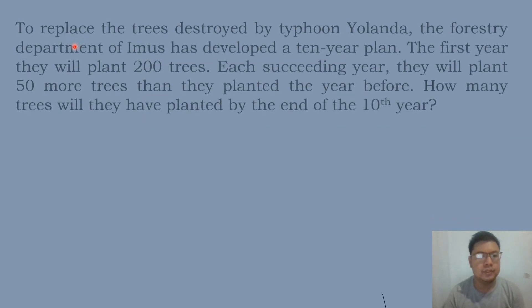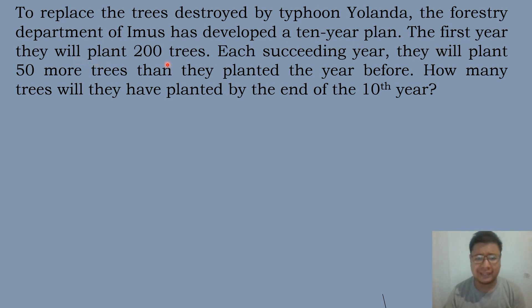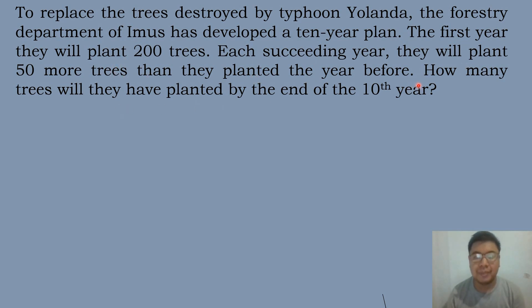Let's solve our first problem. To replace the trees destroyed by Typhoon Yolanda, the Forestry Department of Imbus has developed a 10-year plan. The first year they will plant 200 trees. Each succeeding year they will plant 50 more trees than they planted the year before. How many trees will they have planted by the end of the 10th year?